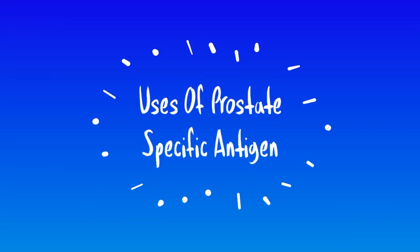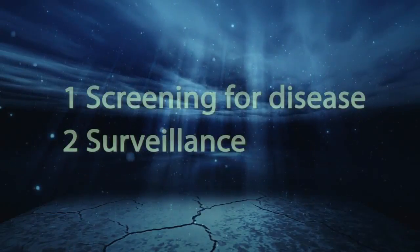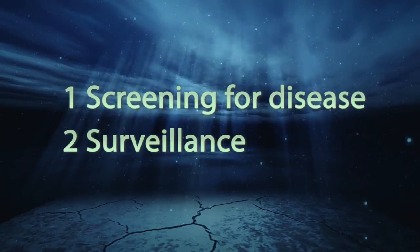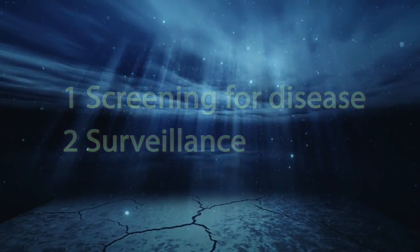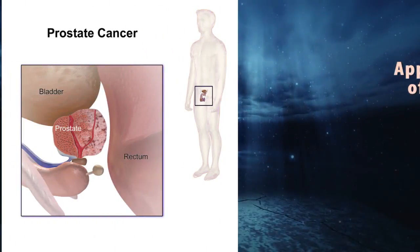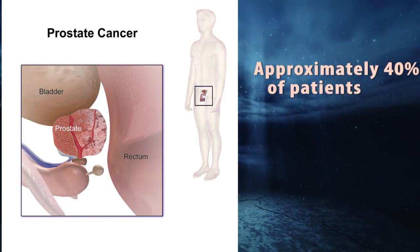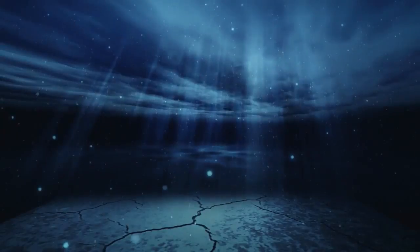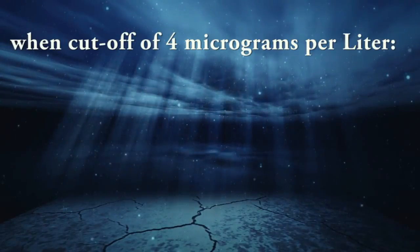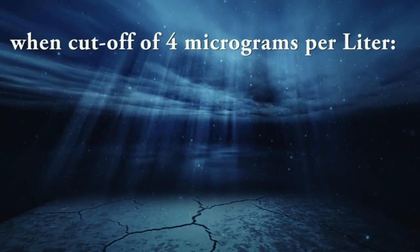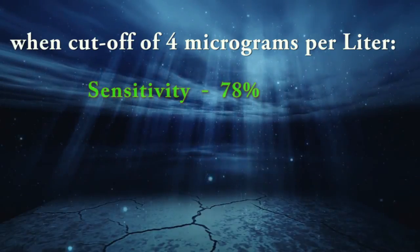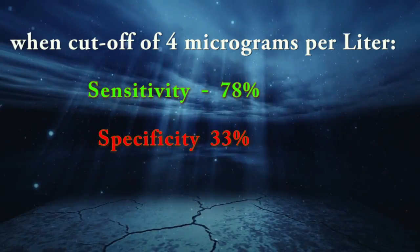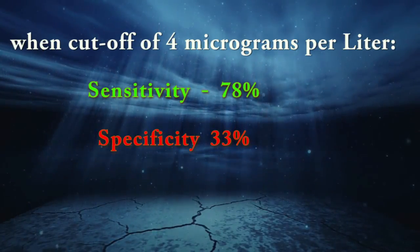There are two uses for the prostate-specific antigen test: screening for disease and surveillance. Approximately 40% of patients with organ-confined prostate cancer show no elevation of serum PSA. The PSA test, when using a cut-off of 4 micrograms per liter, has a sensitivity of 78% and a specificity of 33%.